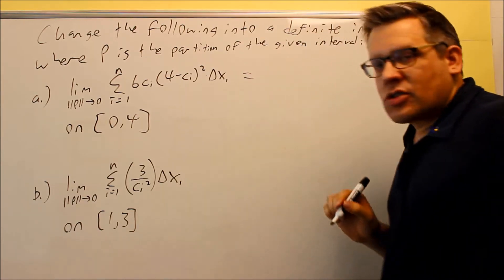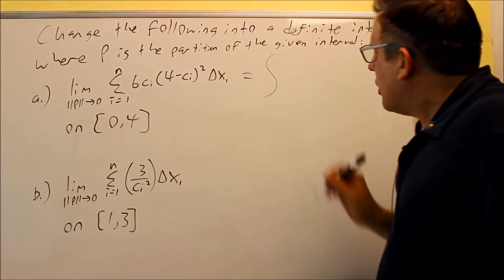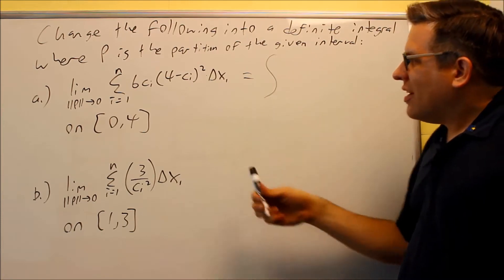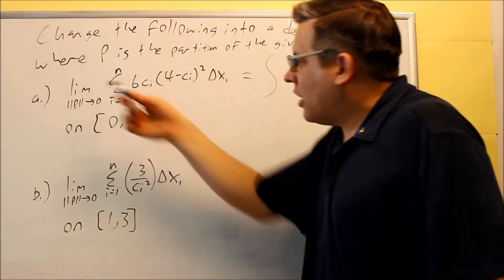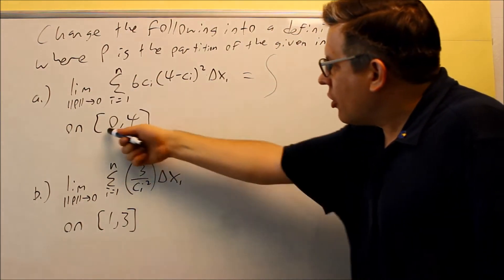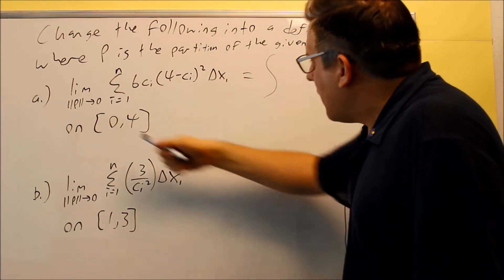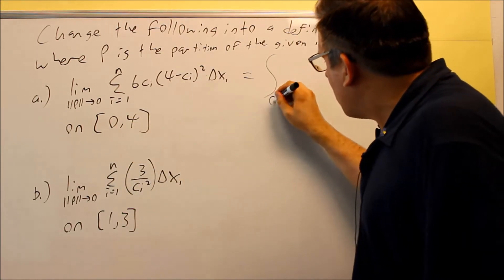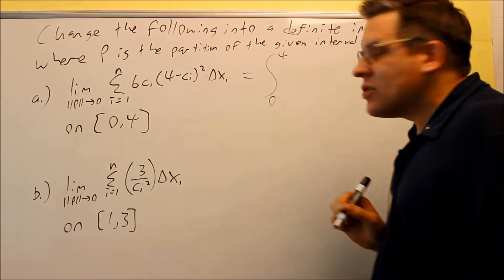So all I want to do is convert this. The first thing I'm going to do is use the integral symbol, which basically takes the place of a limit and a summation sign, and you're going to use zero and four. The a is always your first number that goes down below, and your b is going to go on top.